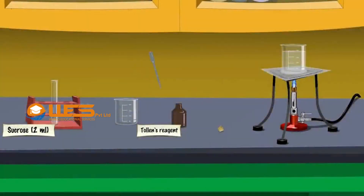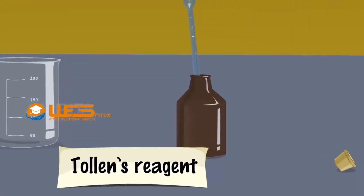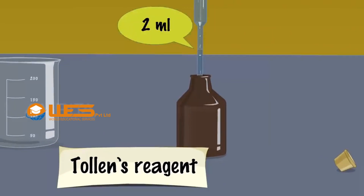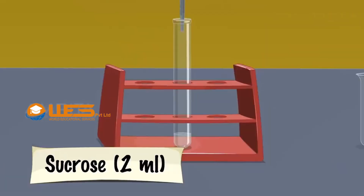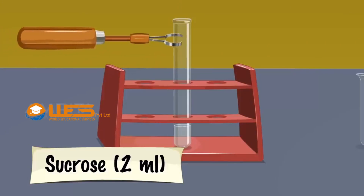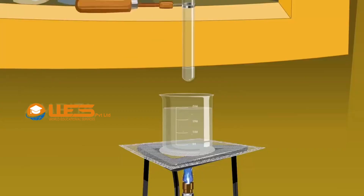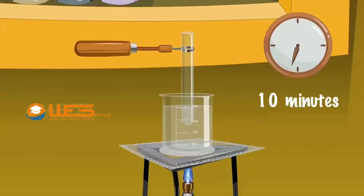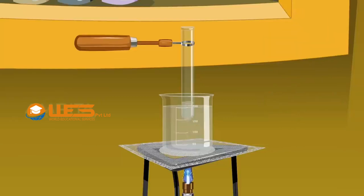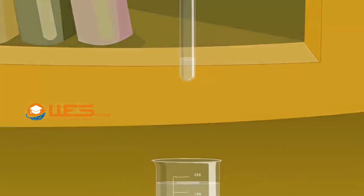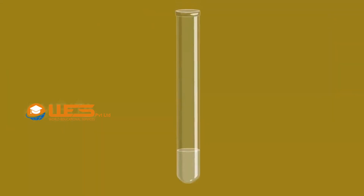Sucrose. Take 2 ml of Tollens reagent using a dropper. Add it to a test tube containing 2 ml aqueous solution of sucrose. Remove the test tube from the rack using a test tube holder. Place it in a boiling water bath and heat for 10 minutes. There will be no characteristic change, indicating the absence of reducing carbohydrate.